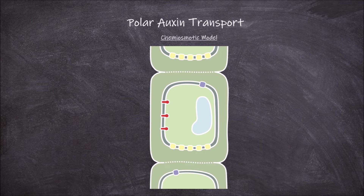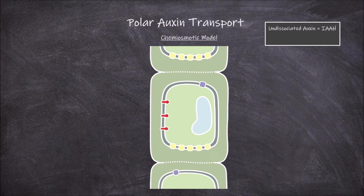Auxin can be found in the cells in two forms: undissociated and dissociated. These different forms have different methods of moving between cells.